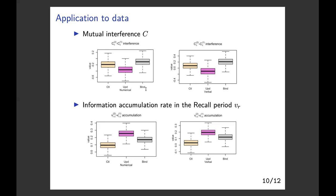If training can indeed improve the level of mutual interference, we expect the updating group to have a larger decrease than the control group, which is consistent with our results shown in the figure. However, if there is indeed a transfer effect in the level of mutual interference, we also expect the binding group to have a larger decrease than the control group, which contrasts the results that we found here. Therefore, for the mutual interference parameter C, we did not find any evidence in the data supporting the existence of a transfer effect, and generally we do not find evidence supporting that training in one working memory task can improve the overall working memory capacity and transfer to another working memory task.